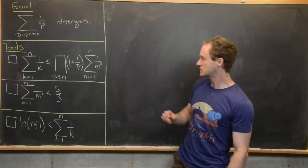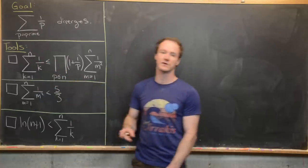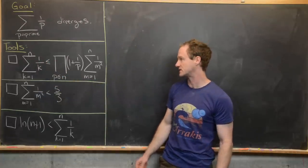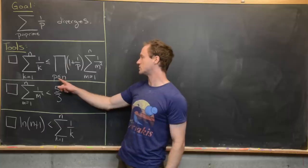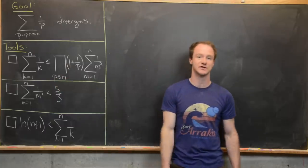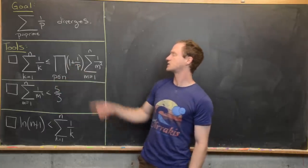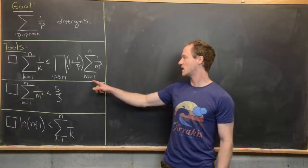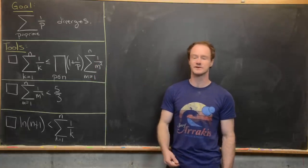The first inequality says that the sum k equals 1 to n of 1 over k — the nth partial sum of the harmonic series — is less than or equal to the product over all primes less than or equal to n of (1 + 1/p), times the sum as m goes from 1 to n of 1 over m squared.